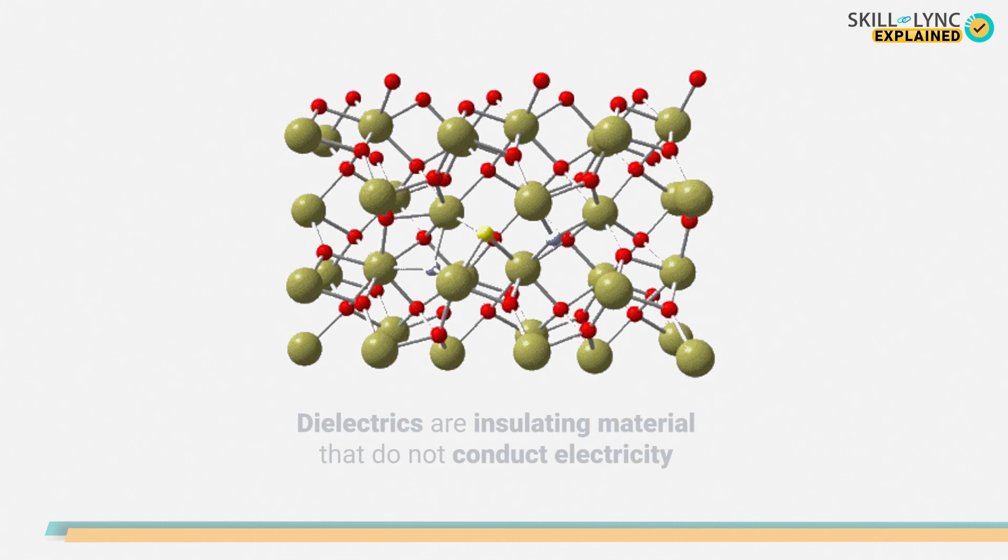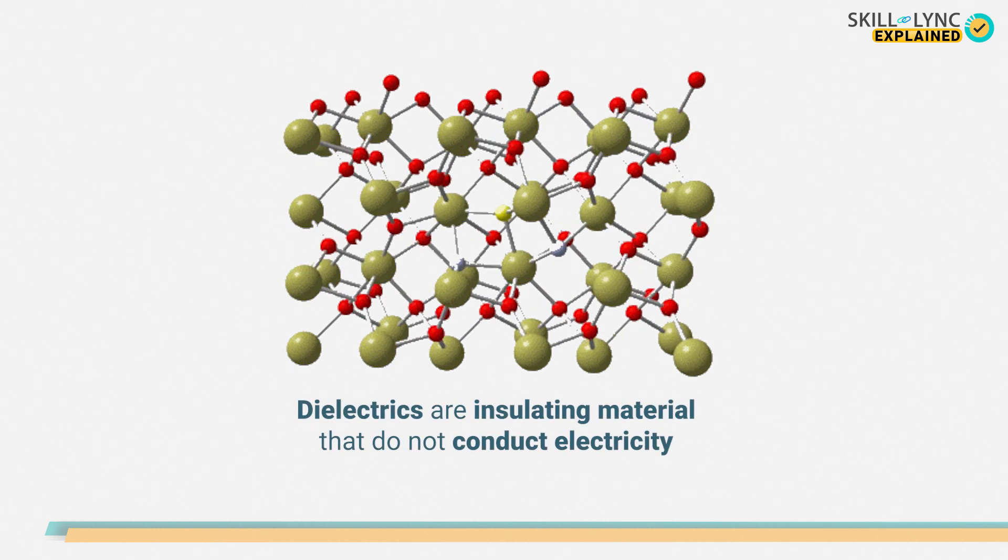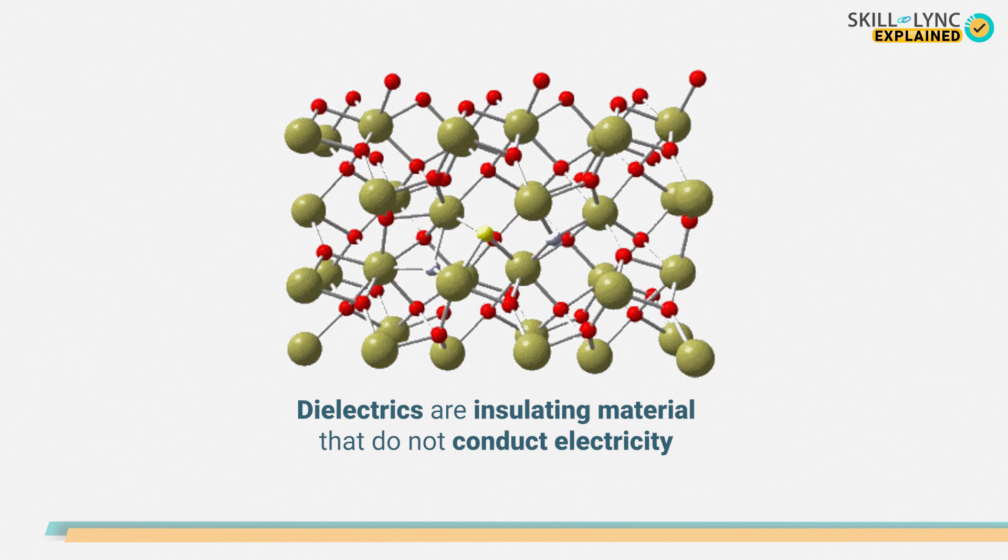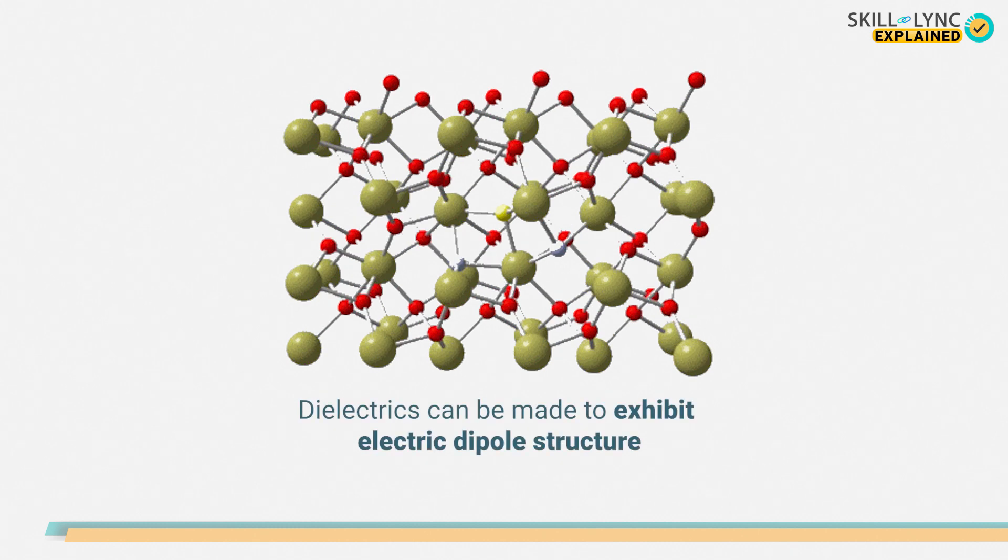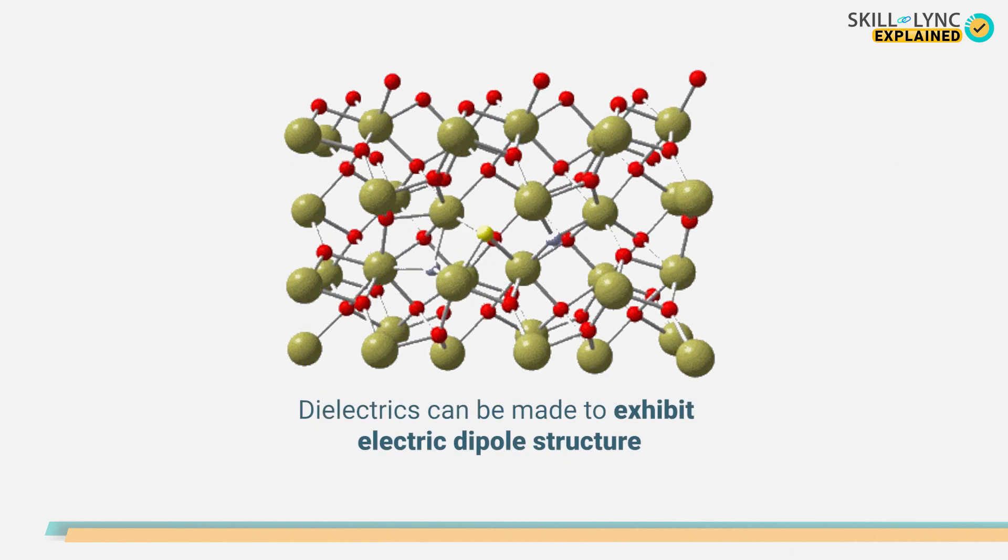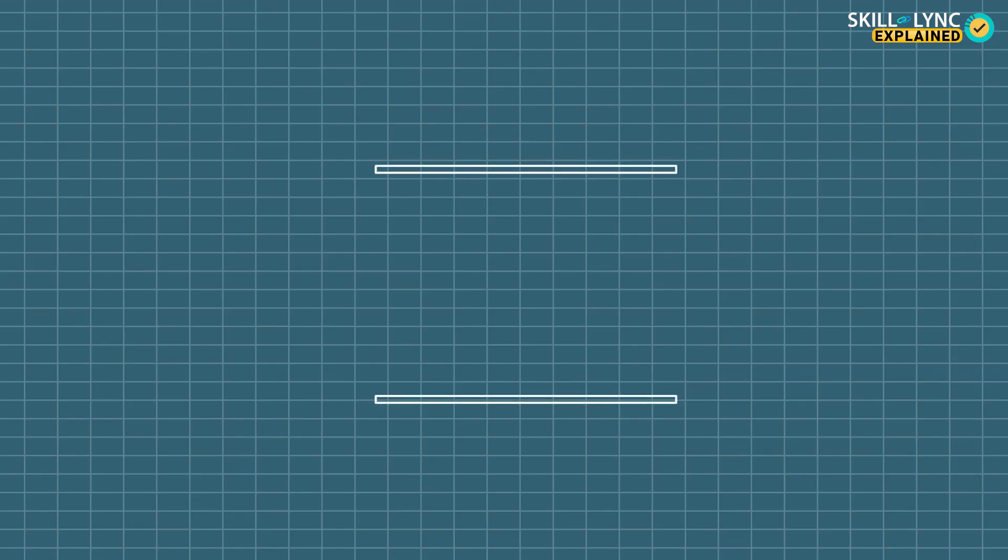Coming back to the definition, a dielectric is an insulating material that has electrons tightly bound to the nucleus and so they do not conduct electricity, but it can be made to exhibit electric dipole structure. Let's see how this happens. Assume we have two conducting plates separated by a particular distance. When it is connected across a voltage, the plate connected with the positive terminal will get accumulated with positive charges and negative charges will accumulate at the other plate.